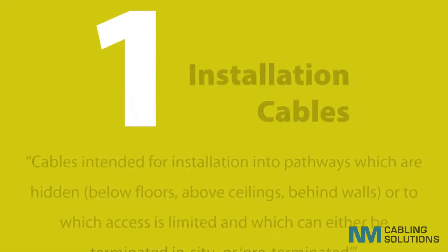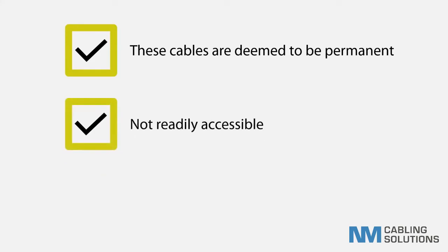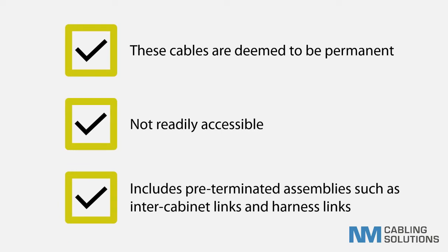The first covers installation cables and the actual clause is shown here. For further clarity, these cables are deemed to be permanent and not readily accessible. By the wording, this also includes inter and intra cabinet links such as switch links, even though some may mistakenly view these as long patch leads. If they are routed within the cabinets and along pathways in such a way so they are not easily removed, then they are in scope of the CPR and need to be made from compliant cable.